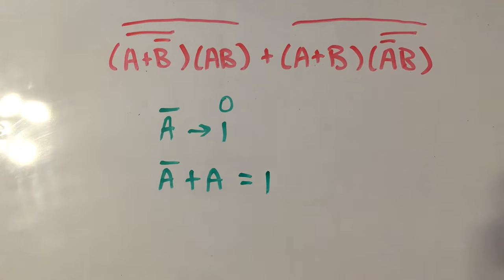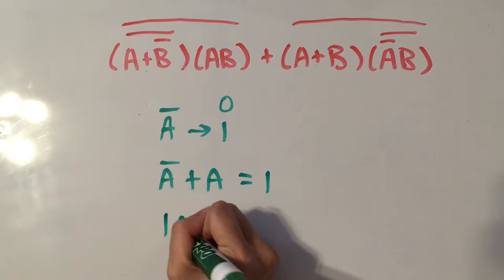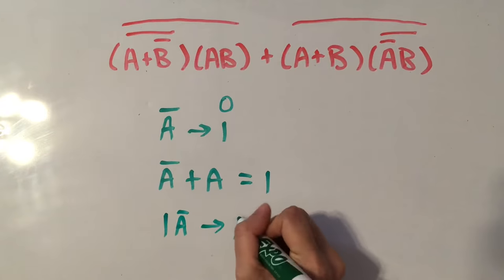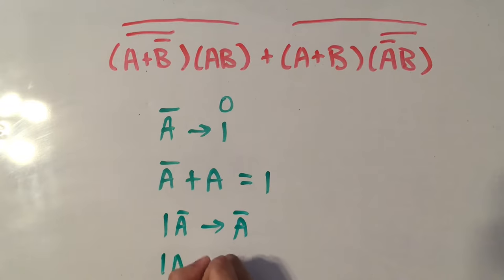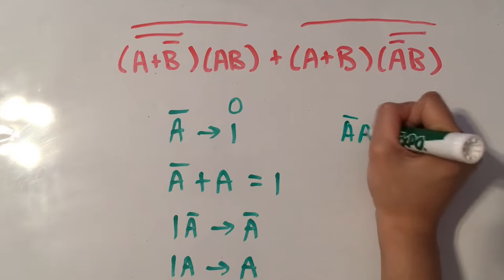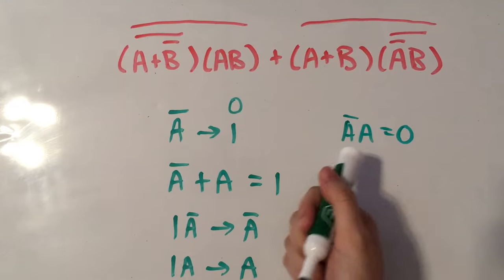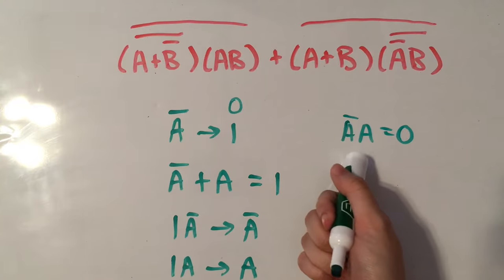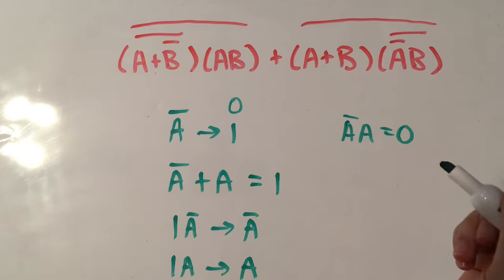And if we have 1 times NOT A, that's going to equal NOT A, and if we have 1 times A, we get A. And we also have the fact that NOT A times A equals 0, because one of these has to equal 0, and 0 times anything equals 0.